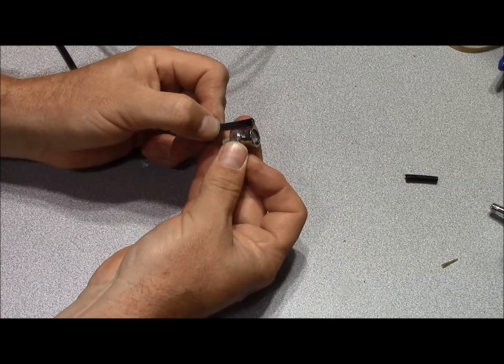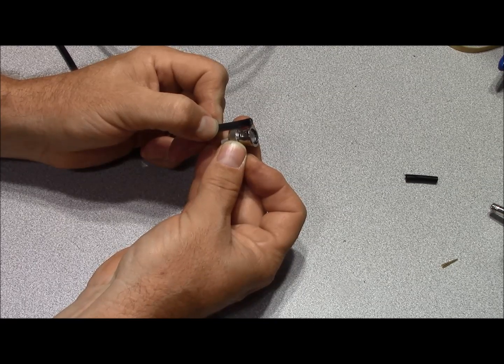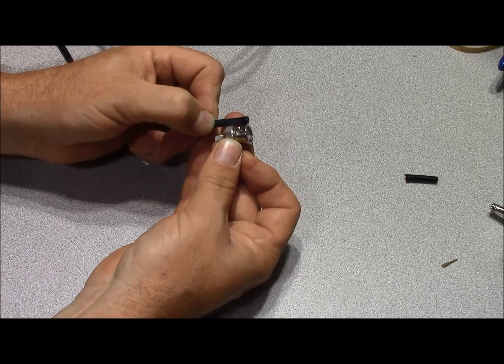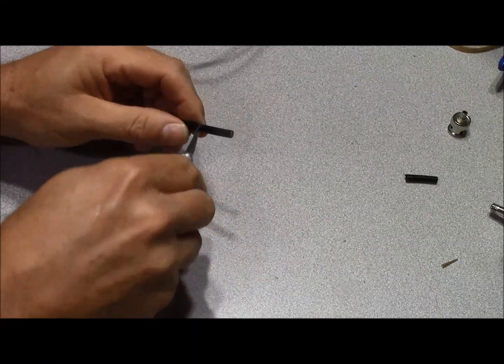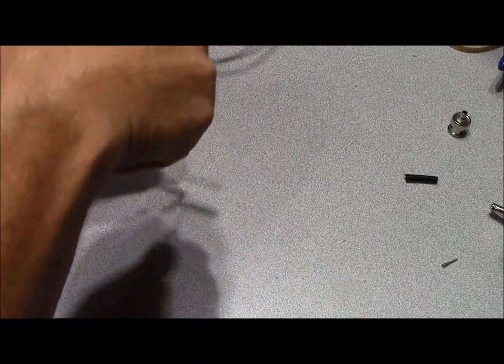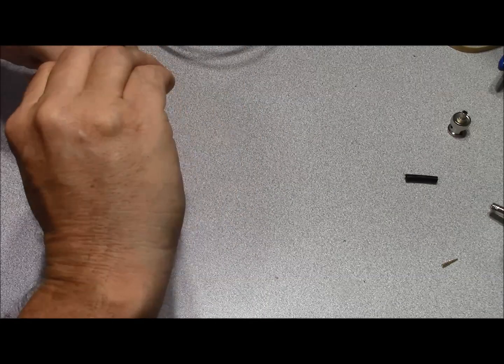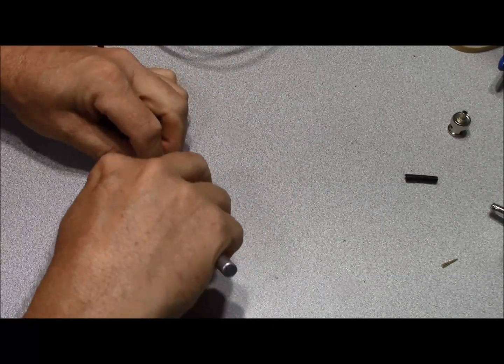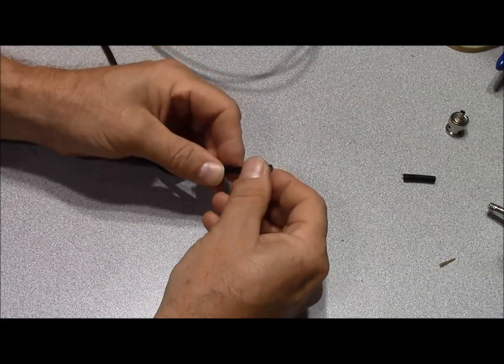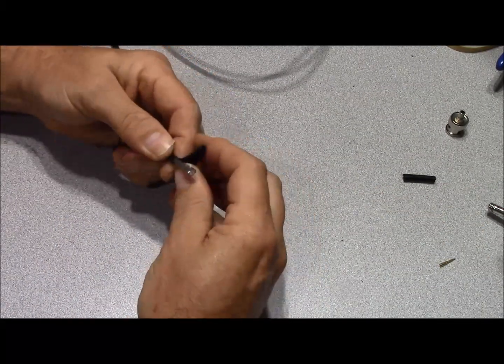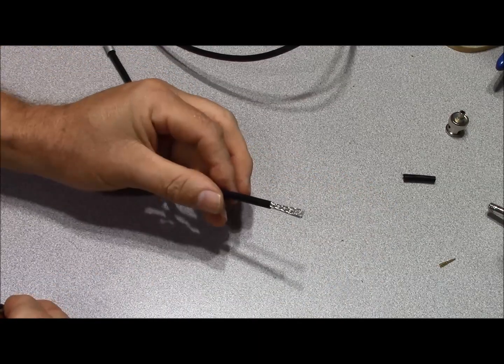Again, measure where you're going to remove your outer jacket, which is the length of the body of the connector. And using an exacto knife, make your cut around the jacket. And then I'll typically run one along the top. And this will allow us to remove the jacket from the cable.